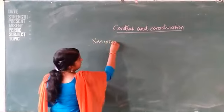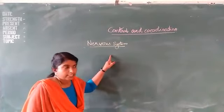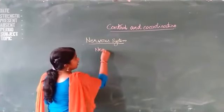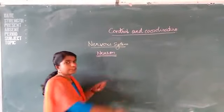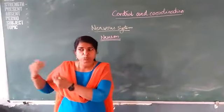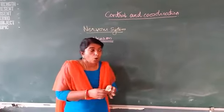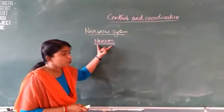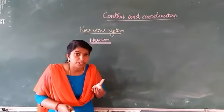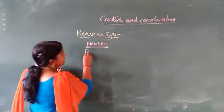In Class 9, you have already learned the structural and functional unit of the nervous system. What is the nervous system? How do these nerve cells receive the signals? Because we are normally responding to outside signals and showing a response. These are specialized nerve cells, and such specialized nerve cells are known as receptors.